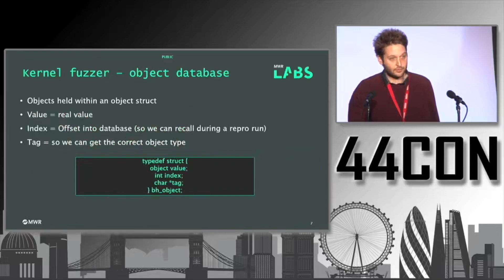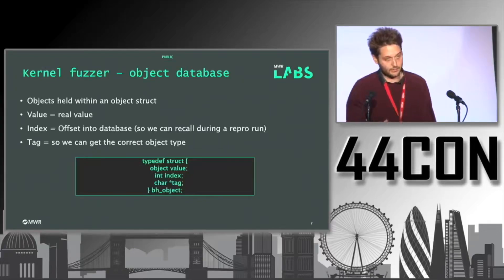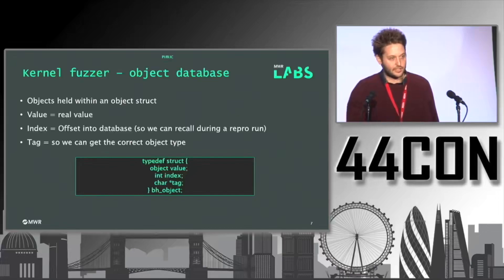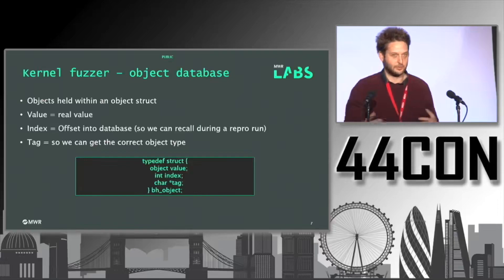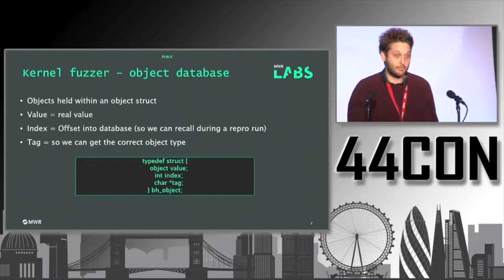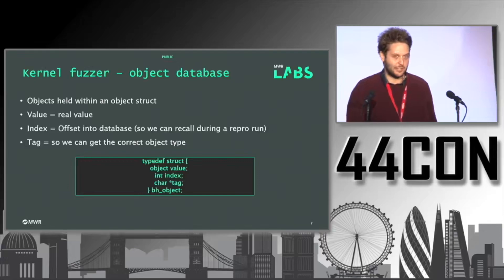When you ask for an object from the fuzzer, you get back an object struct. This contains the value — what you'd pass to the system call — as well as an index, which is an offset into the database. During a repro run, you can't just use the previous value because it doesn't exist anymore. Instead, since the fuzzer works the same way on each run, you can call into the same place in the database and get the same thing back. You also get a tag back so you can verify you received the expected type, such as a file descriptor.